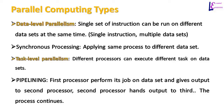The key point to note is that in data level parallelism, each processor is doing the same thing, whereas in task level parallelism, each processor is doing a different thing to the same data set.